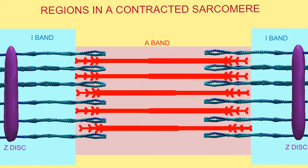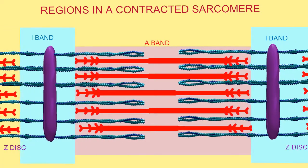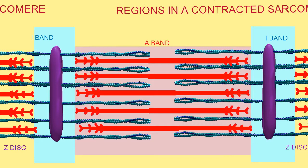In a contracting muscle fiber, the I-bands are much narrower, because the myosin filaments have brought the Z-discs very close to each other.